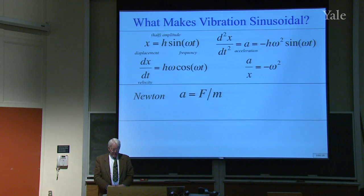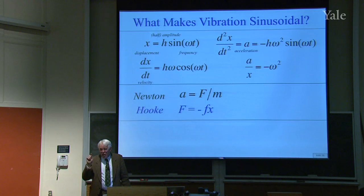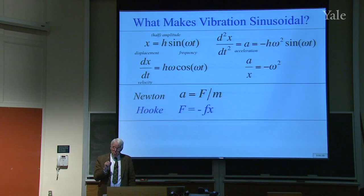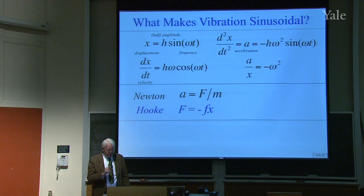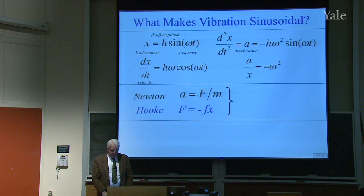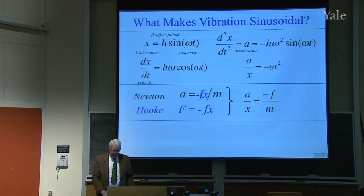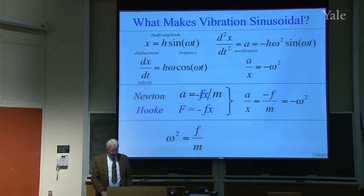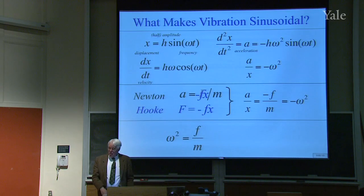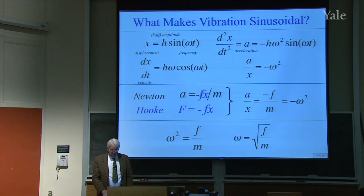Newton said acceleration equals force over mass. If things obey Hooke's law, force is proportional to displacement: F = −fx. Substituting into Newton's second law gives a/x = −f/m, and since a/x = −ω², we get ω² = f/m. So the frequency squared equals the force constant divided by the mass, or the frequency equals the square root of the force constant divided by the mass.